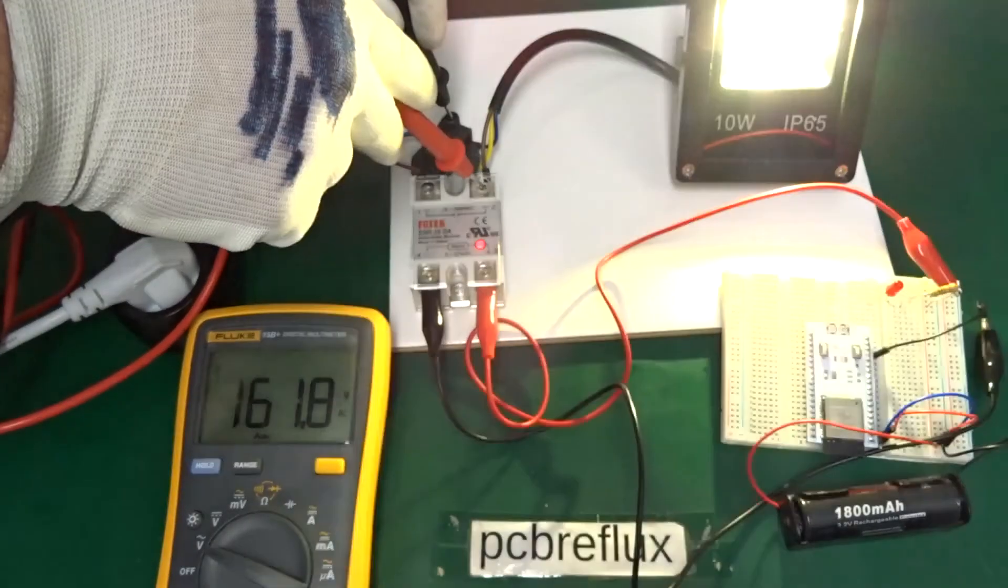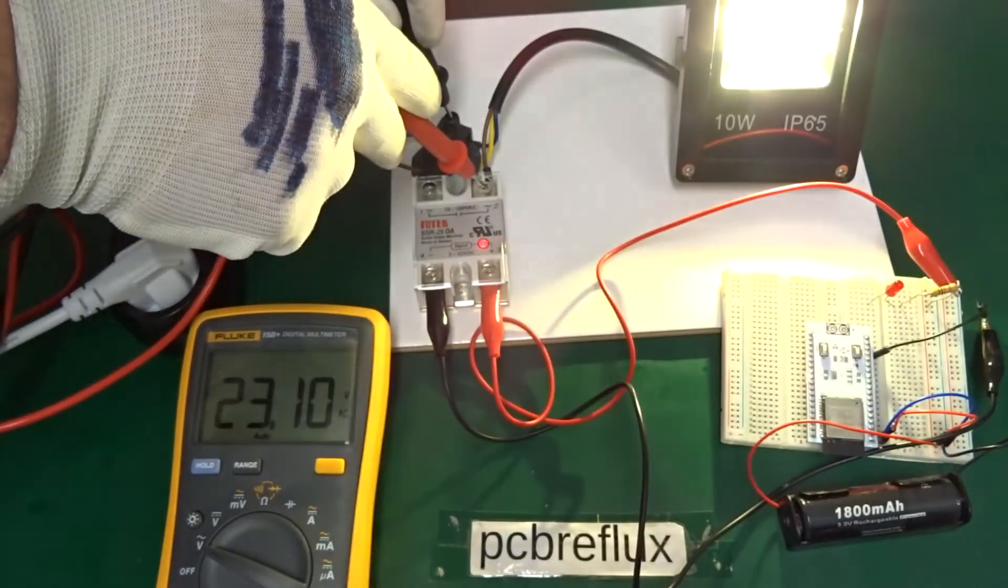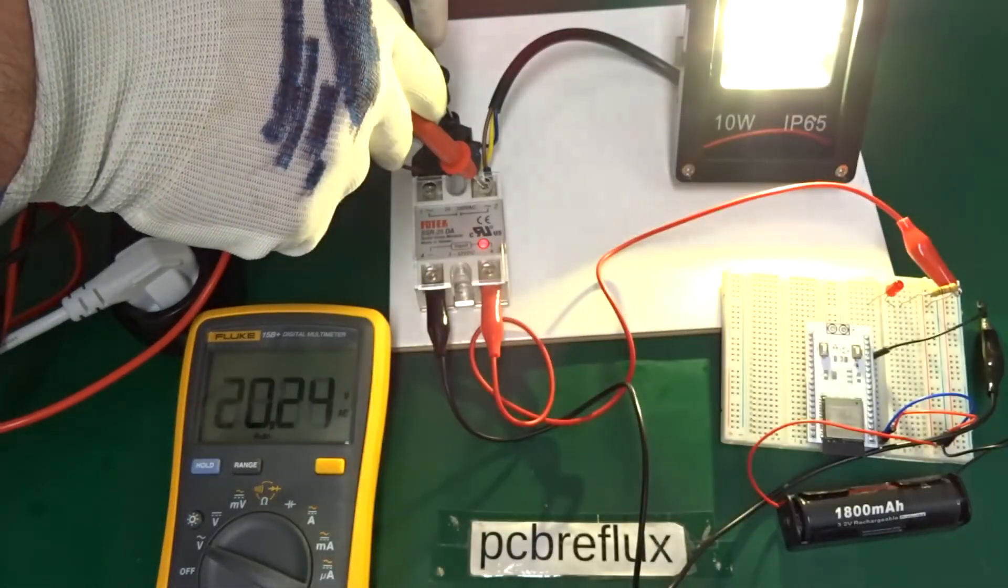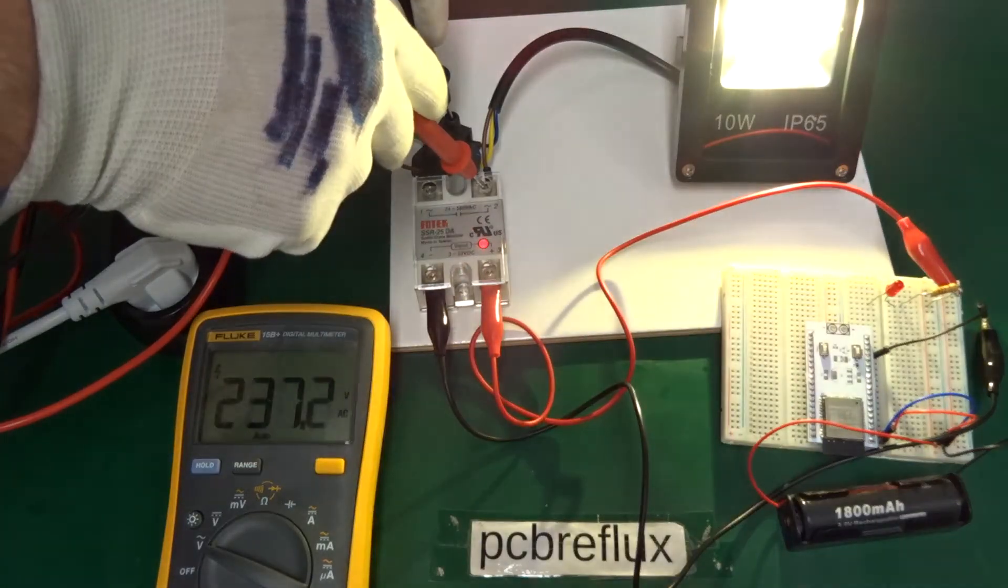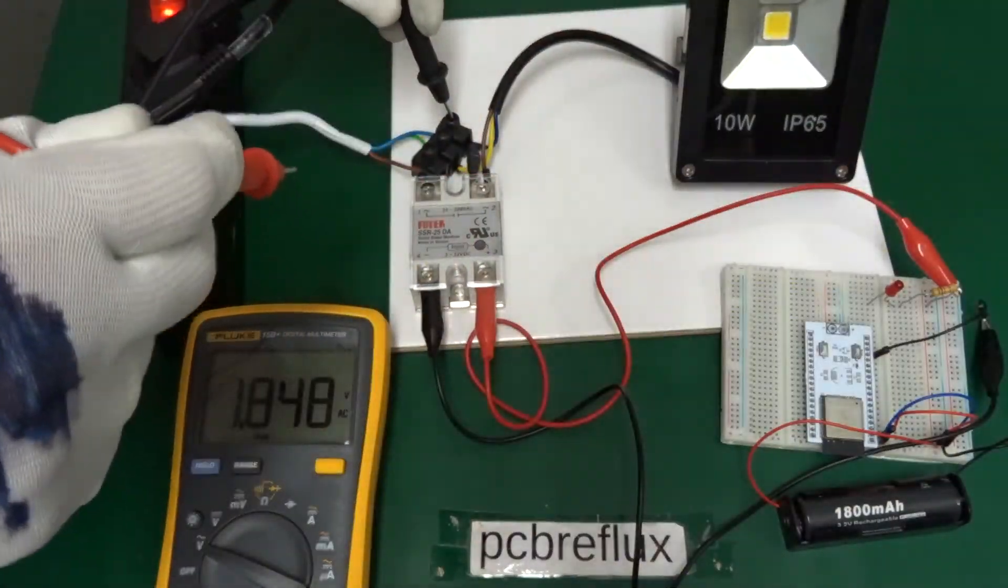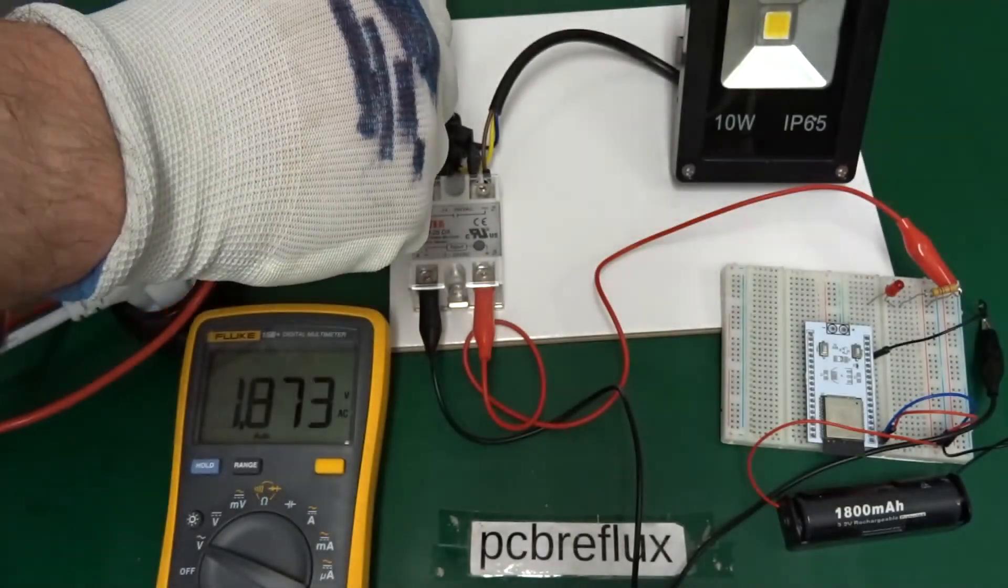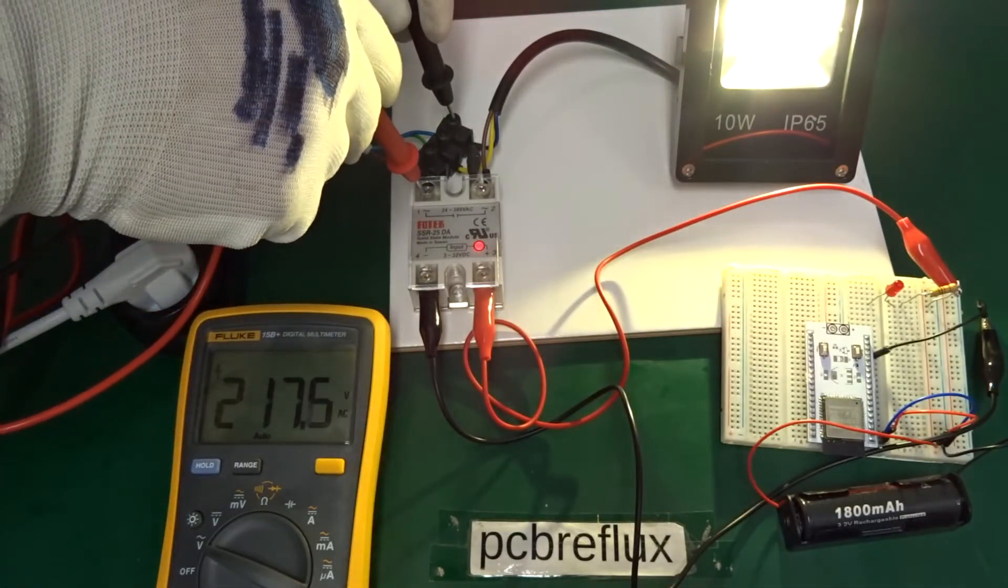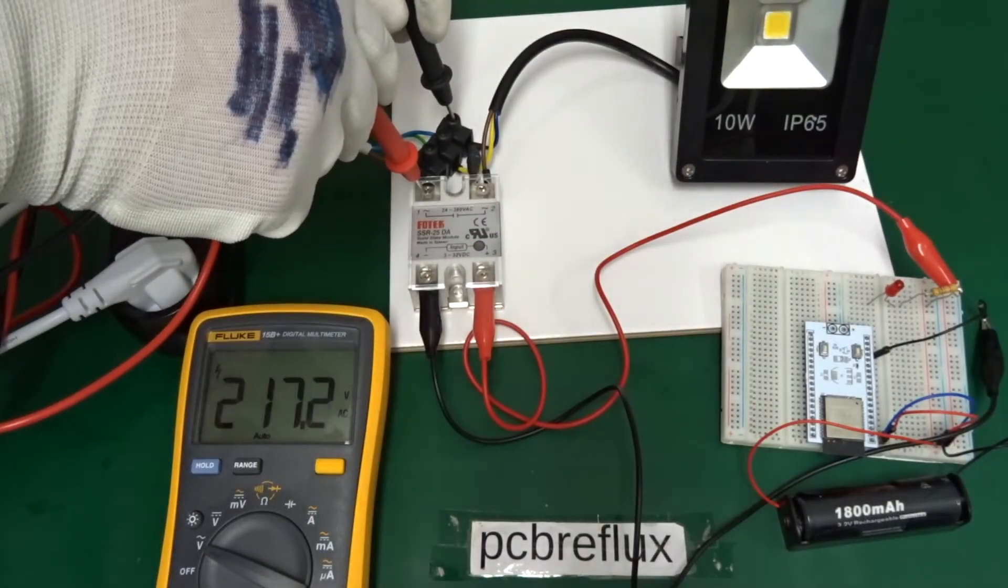And we see that the voltage is switching between 0 and 220 volts. So around about 220 volts and let's measure the mains side. And we have a steady 220 volts on the mains side.